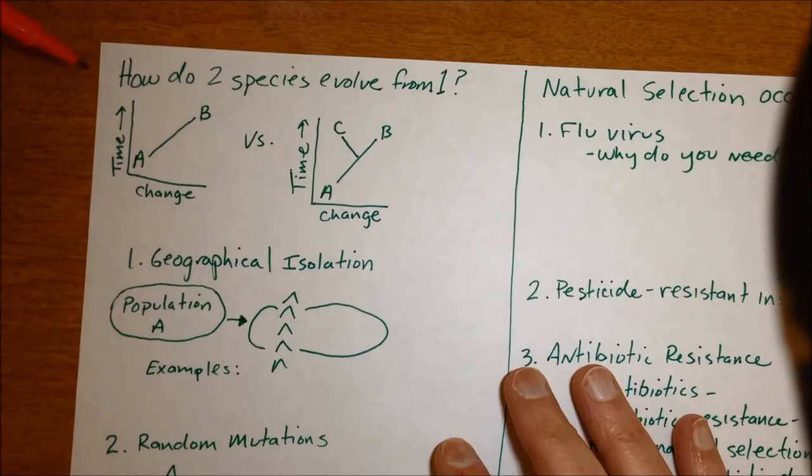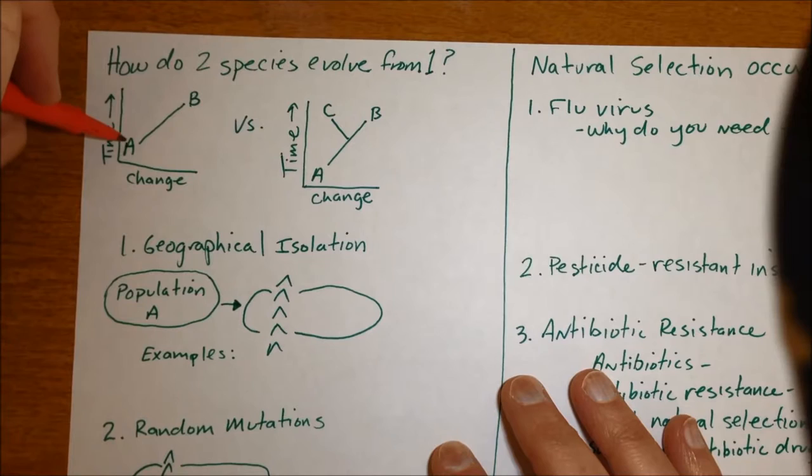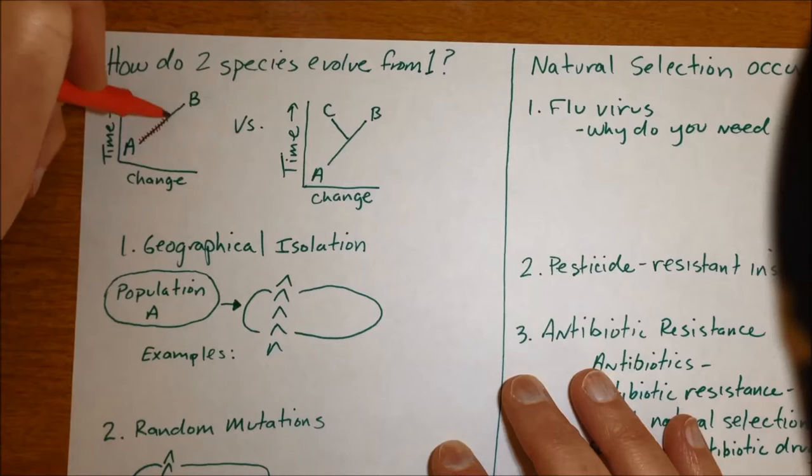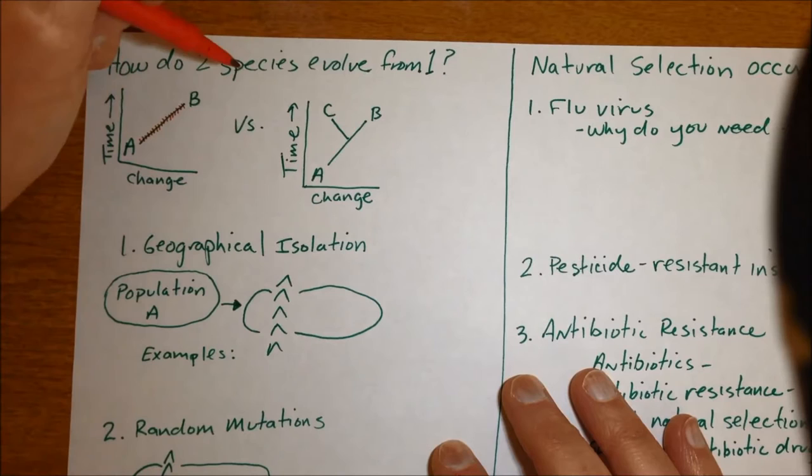So first topic is normally when we talk about evolution and natural selection we talk about starting with one species and over time it slowly changes as traits are favored by natural selection from one species into another, so species A into species B.